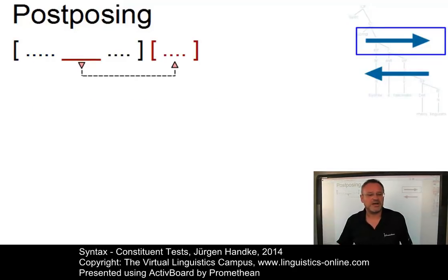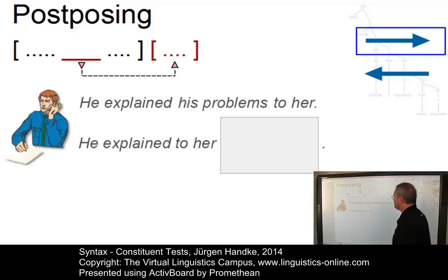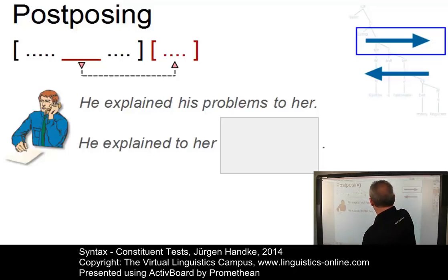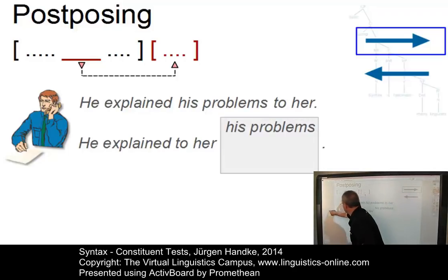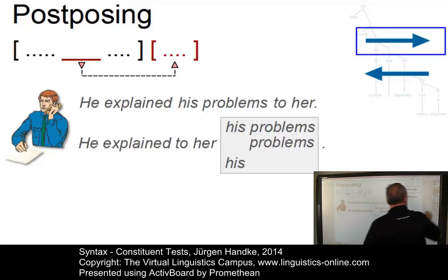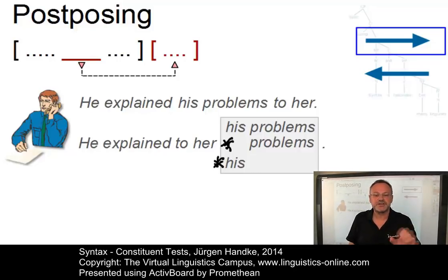Similarly, we can move elements to the back, again to achieve specific stylistic effects. But again, only a whole constituent can be post-posed in this way. Let's demonstrate that. 'He explained his problems to her.' Let's find out what we can post-pose. For example, we can post-pose 'his problems': 'He explained to her his problems.' But we cannot post-pose just 'problems,' neither can we just post-pose 'his.' So these latter two cases are ungrammatical. And again, it is only the entire construction 'his problems' that can be post-posed, not just part of it.